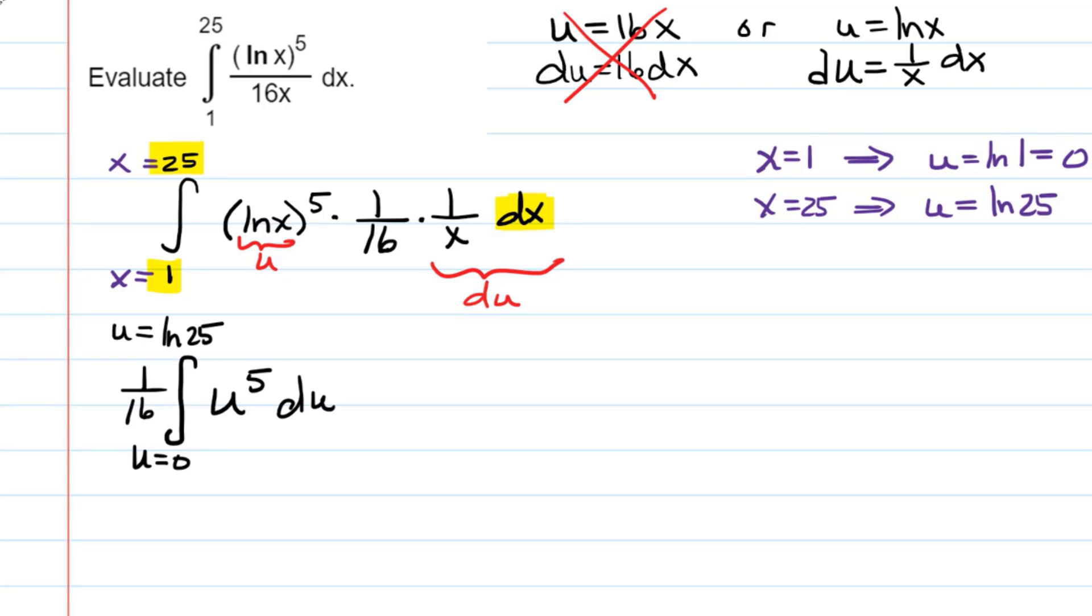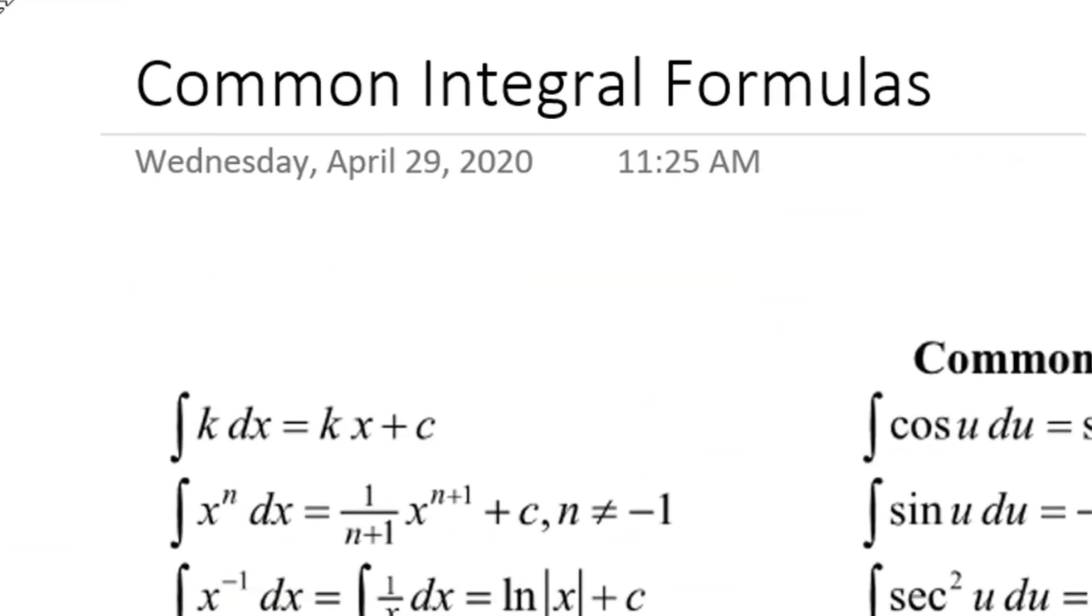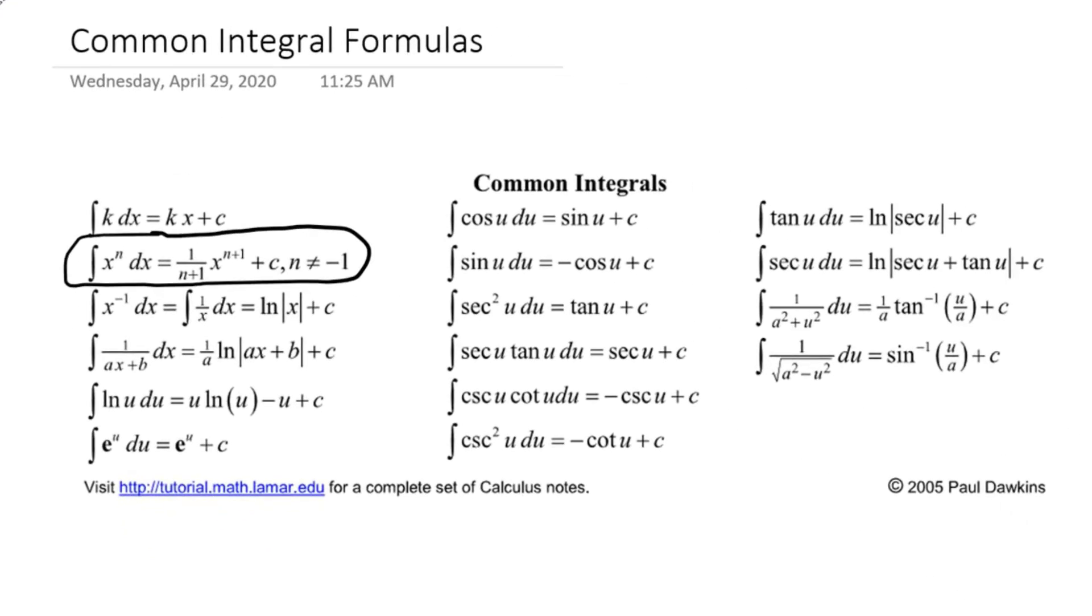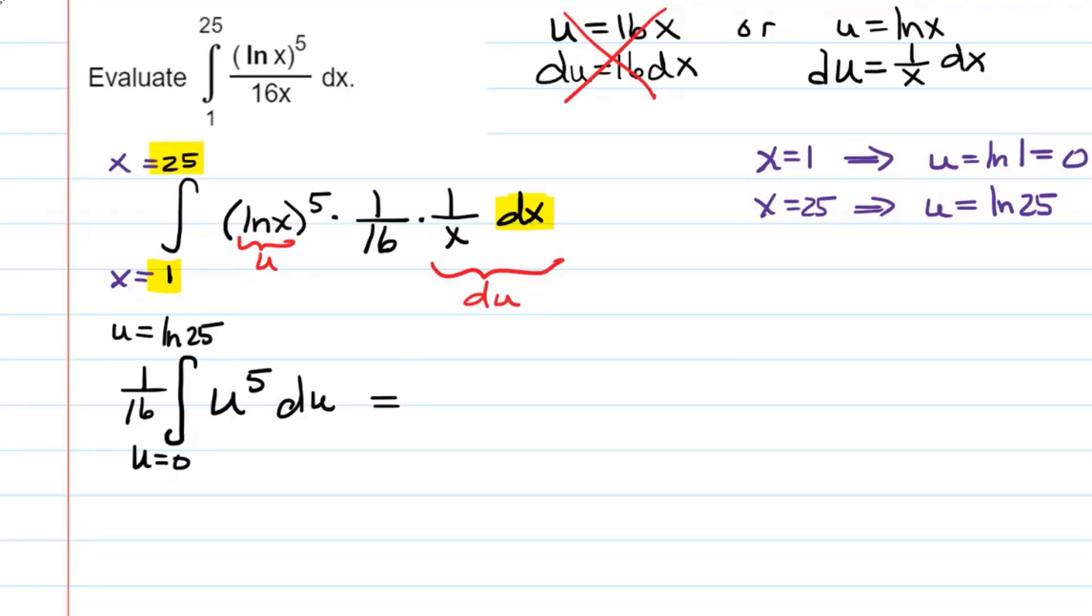Now this fits one of my common integration formulas, right? This is the situation x to the n. So we can use the rule that we can add 1 to the exponent and divide by it. So now I know I picked a good u substitution. I was able to replace all of my x's with u's, and my resulting integrand, u to the fifth, fits one of my integration formulas that I can use to integrate.